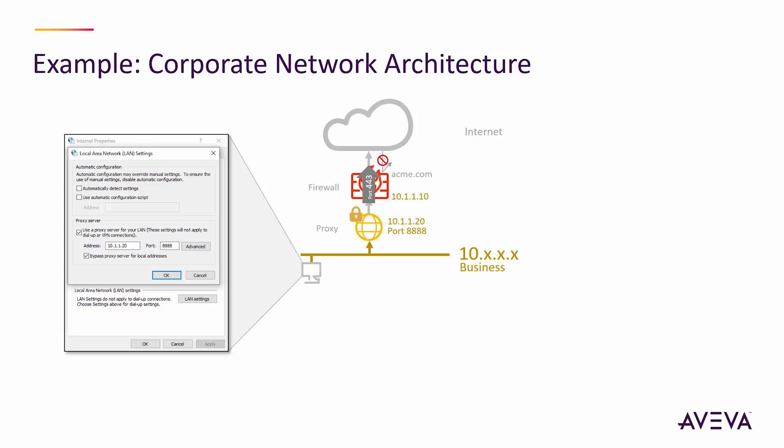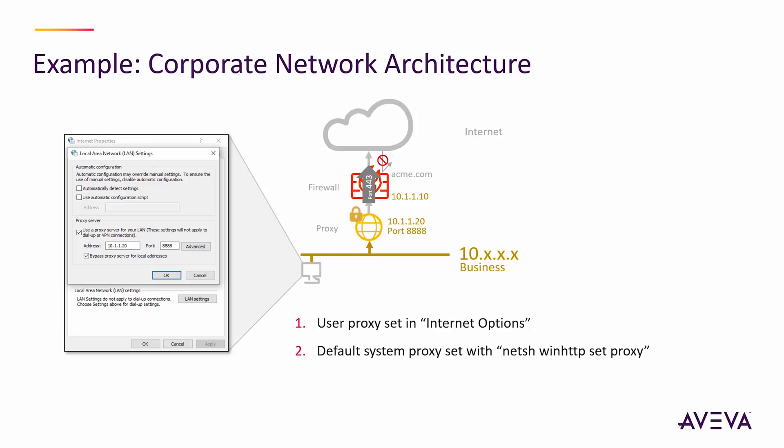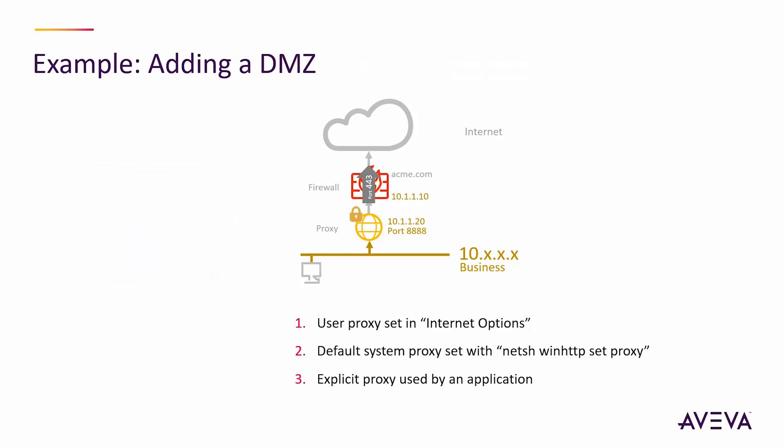There are several ways that you can configure a proxy. One way is with explicit proxy settings, as shown here. It can also be done with a script, or your network can be set up to auto-configure it. There are actually three proxies to consider. One is a user-based proxy configured in Internet Options in Windows. There's also a default system proxy that you can set with a command line. And some applications will have their own explicit proxy settings — we'll come back to that a little bit later.